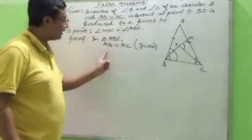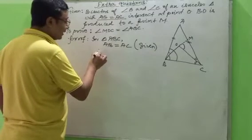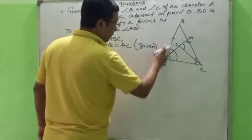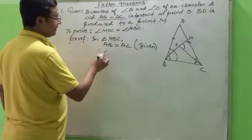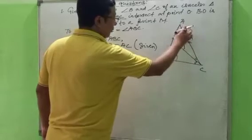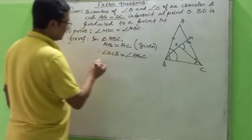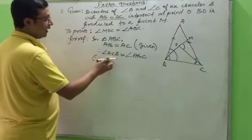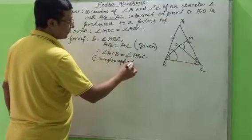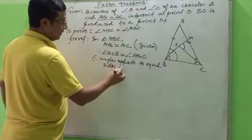Therefore, the angle opposite to side AB is angle C, so angle ACB equals angle ABC — the angle opposite to side AC. Since angles opposite to equal sides are equal.